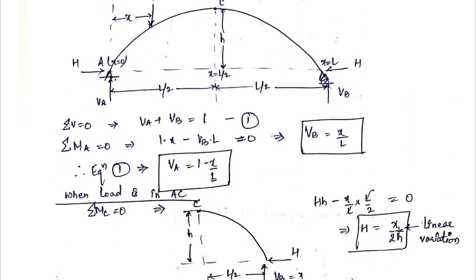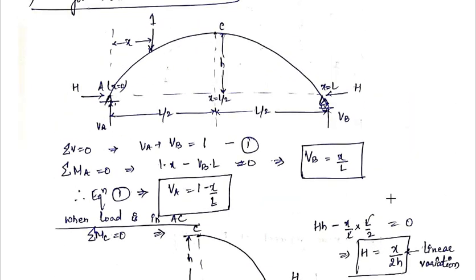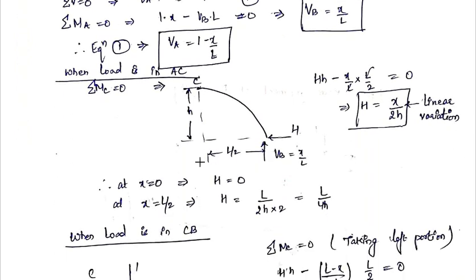This equation H equals x by 2h is for the AC portion. At A, x equals 0, so H equals 0. At C, x equals L by 2, so H equals L by 4h. These are the values of horizontal thrust when the unit load is in part AC.